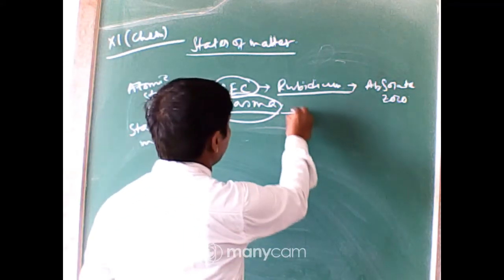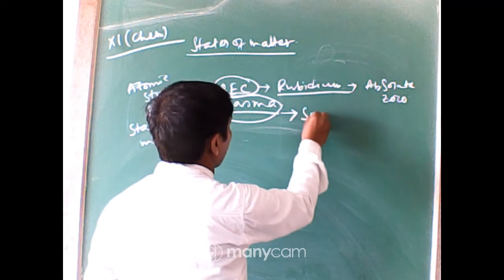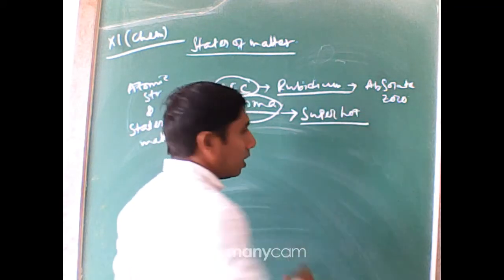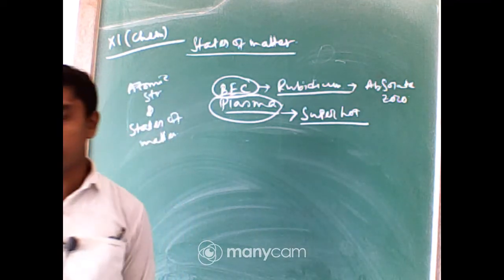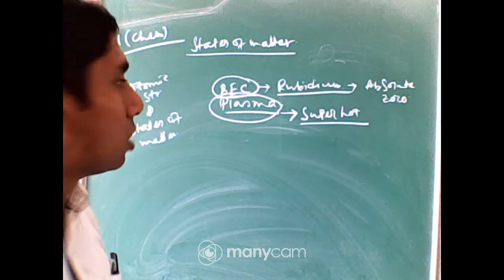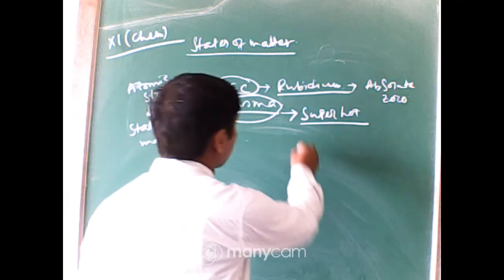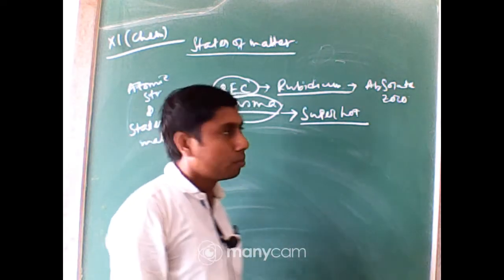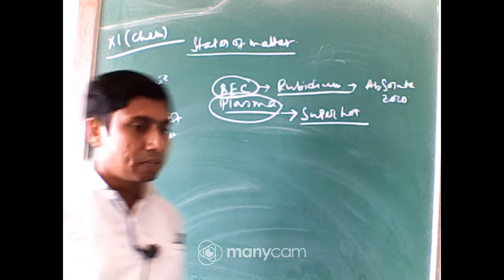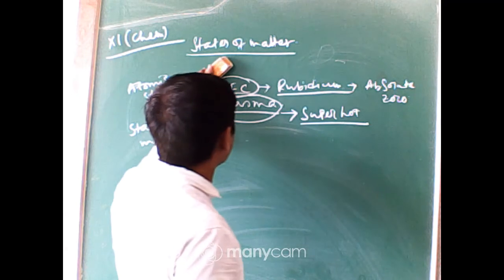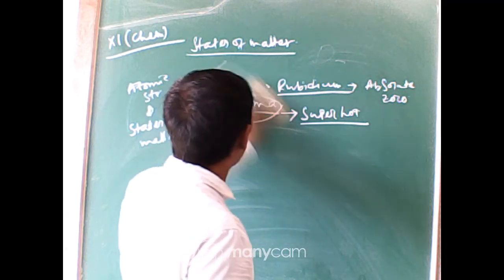In the plasma state, most of the constituent particles are present in the vapor state and also in ionic form. So these are the two specific special states: Bose-Einstein condensate and plasma state.